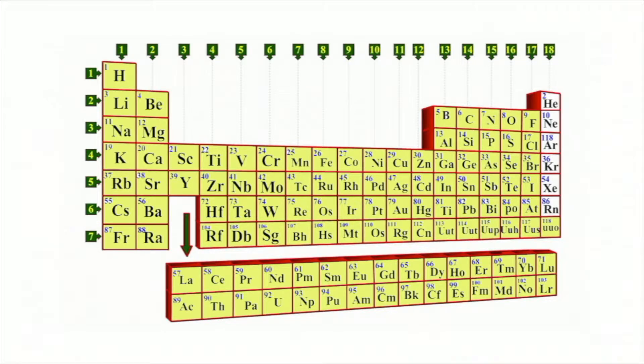Most elements have unstable electron configurations. These elements will react to lose or gain electrons so that they have the same electron configuration as the nearest noble gas.